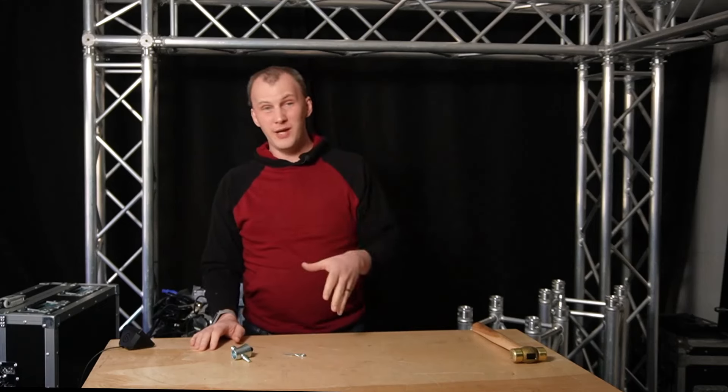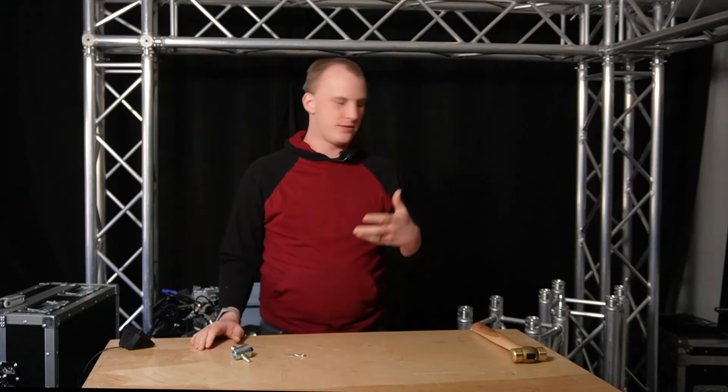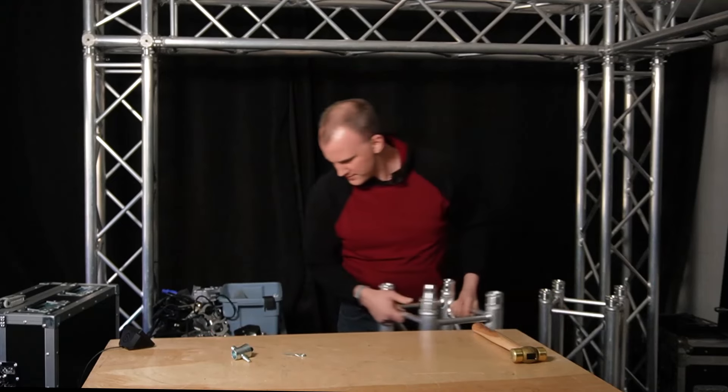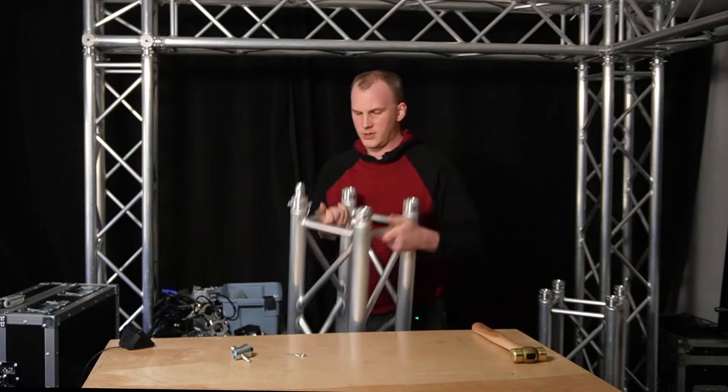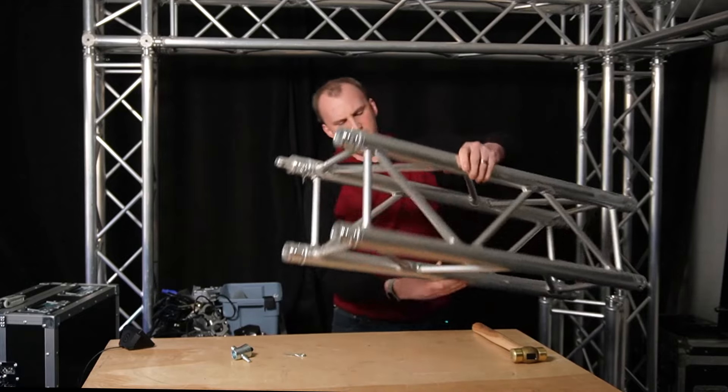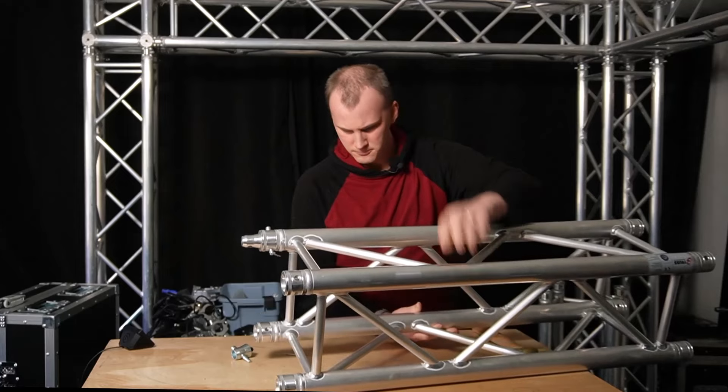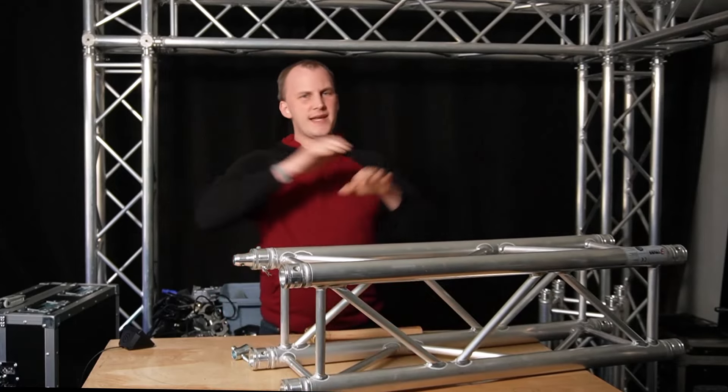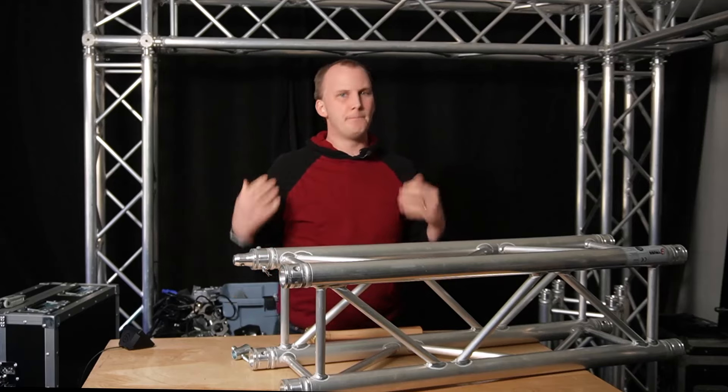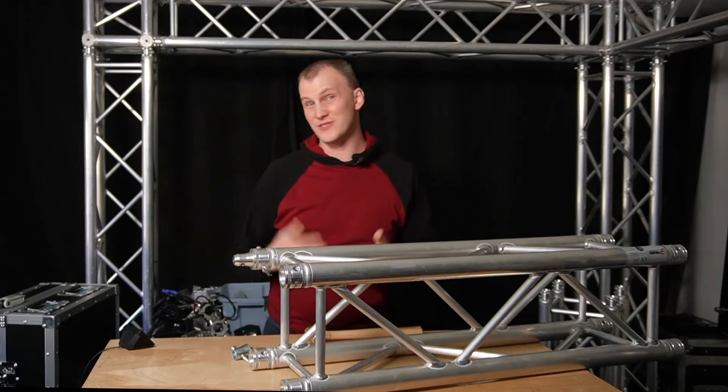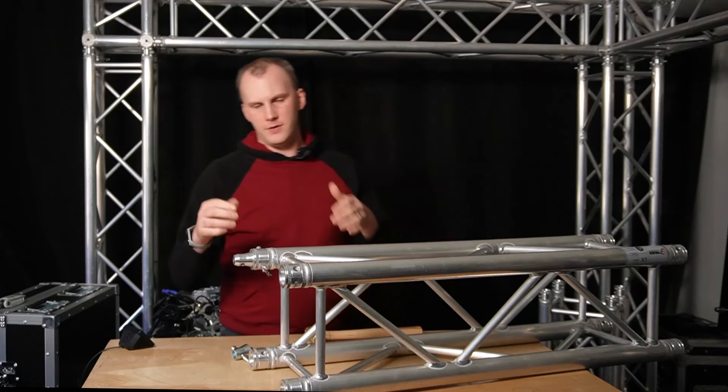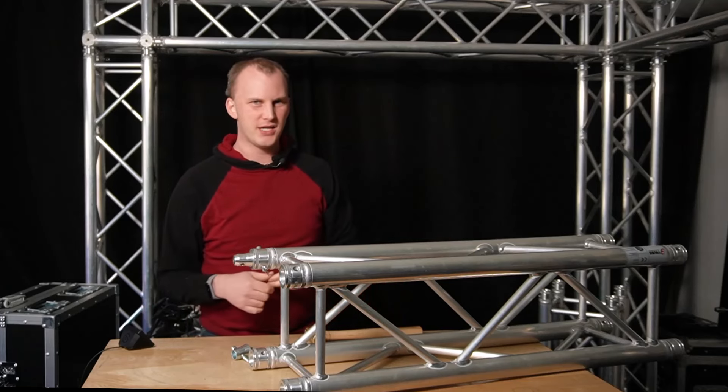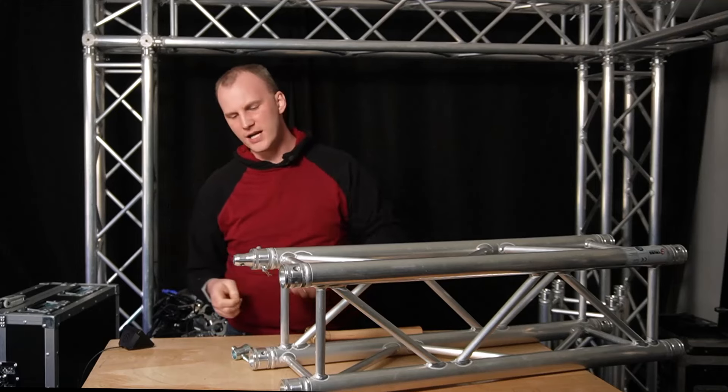Disassembly is going to be the exact opposite, but the same kind of deal. So you're going to take your piece of truss and put it down on your table or wherever you have it. The biggest key is whether it's straight up and down or whether you're laying it down, make sure it's on as flat of a surface as possible, because if truss is crooked then your pins don't line up, and you find yourselves going, hey, why won't it line up?